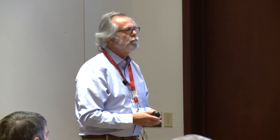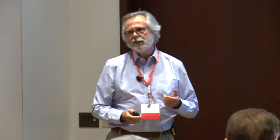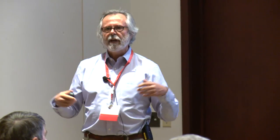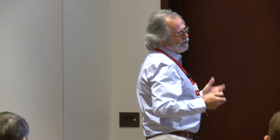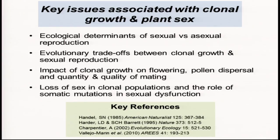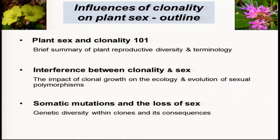Plants are immobile in general, they're hermaphroditic, and there's an issue for cross-pollination as to how far pollen can be transported to secure cross-fertilization. I'd like to talk about in some detail how clone size can affect pollen dispersal, fertility, and the quantity and quality of mating. And then at the end, I'd like to talk about the loss of sex in clonal populations and how somatic mutations may play a role.